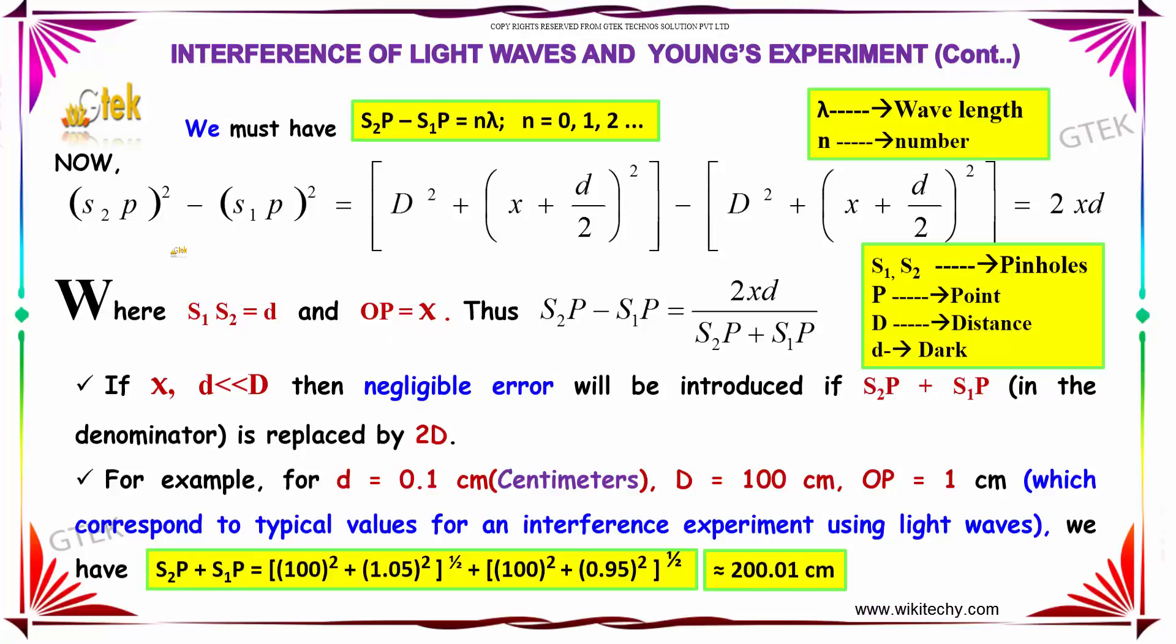where S1S2 is equal to D and OP is equal to X. Thus, S2P minus S1P which is equal to 2XD divided by S2P plus S1P.